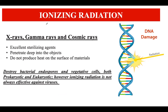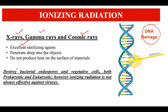Ionizing radiation includes x-rays, gamma rays, and cosmic rays. These directly damage the DNA and thereby kill the microorganisms. They are excellent for sterilization as they destroy both bacterial endospores and vegetative cells.